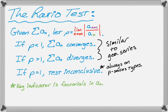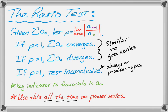And a key indicator that you want to use the ratio test is that the series that you're looking at has factorials in a sub n somewhere. Not always the case, but often the case. And you actually use this all the time on power series when you're finding their interval and radius of convergence, which maybe you haven't heard of yet, but eventually you will. And when you do, you'll find yourself using a ratio test every single time.